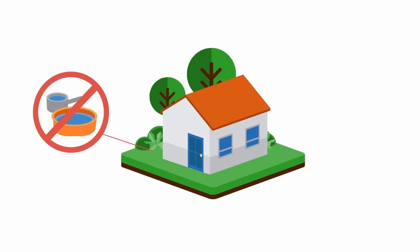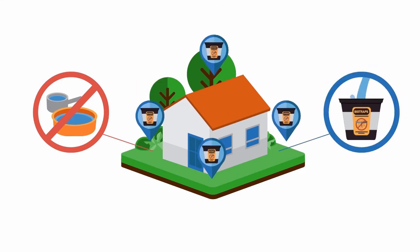Just remove standing water, place the bio traps around your home, add water to the overflow hole, and that's it.